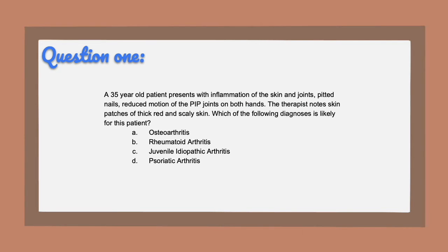Question one: a 35-year-old patient presents with inflammation of the skin and joints, pitted nails, and reduced motion of the PIP joints on both hands. The therapist notes skin patches of thick, red, and scaly skin. Which of the following diagnoses is likely for this patient? A, osteoarthritis. B, rheumatoid arthritis. C, juvenile idiopathic arthritis. Or D, psoriatic arthritis?